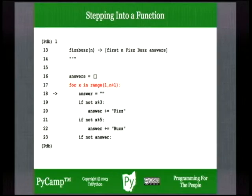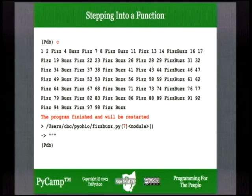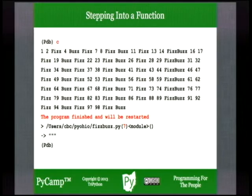Use 'l' for listing — and even though we moved around namespaces, our instruction pointer is still ready to do the next statement inside the for loop of the fizzbuzz function. We can simply 'continue', and Python will buzz right along executing statements, returning from the function, looking for a breakpoint. But there are no more breakpoints in our program past the one at line 30, so the program will go all the way to the end.